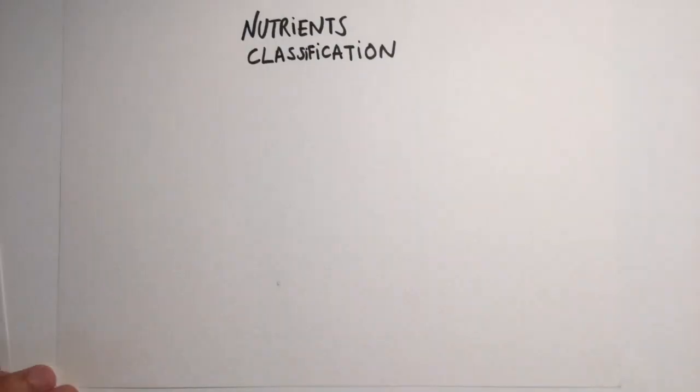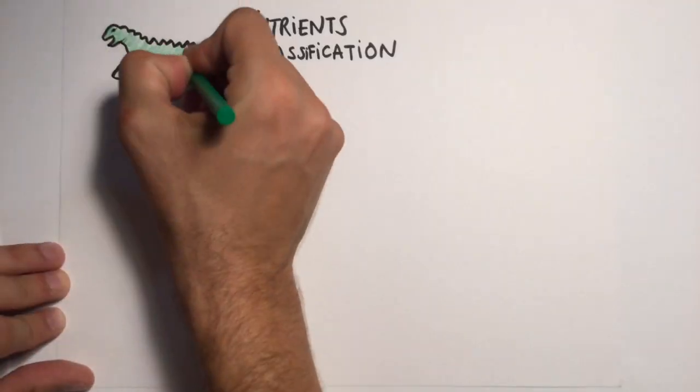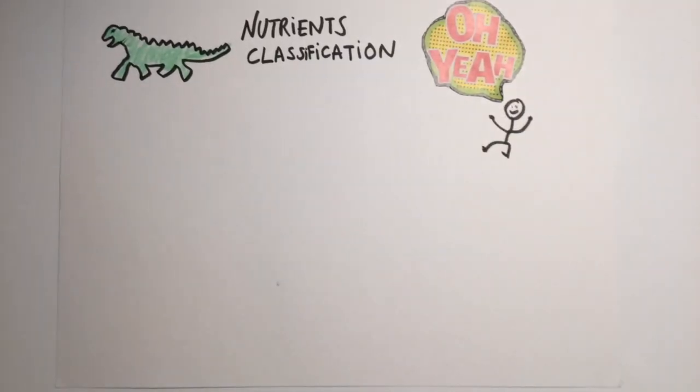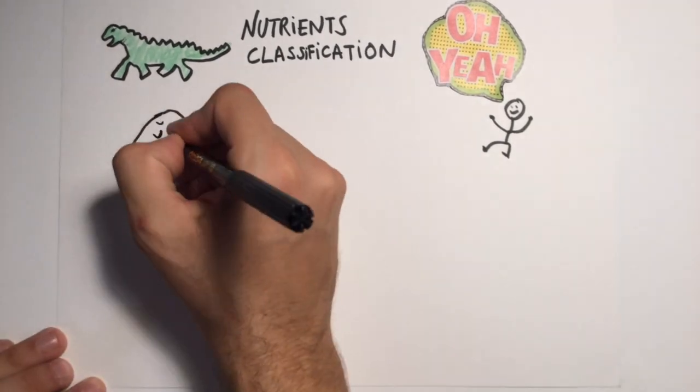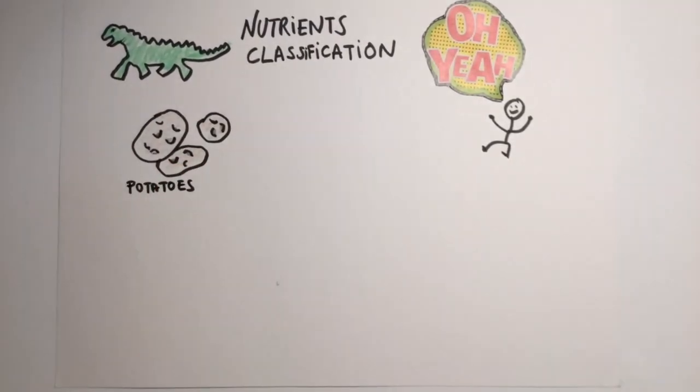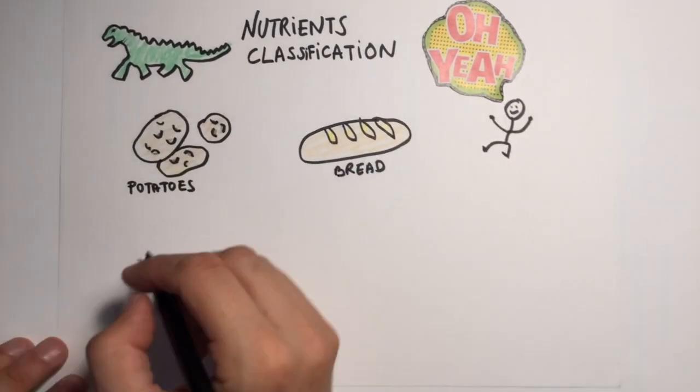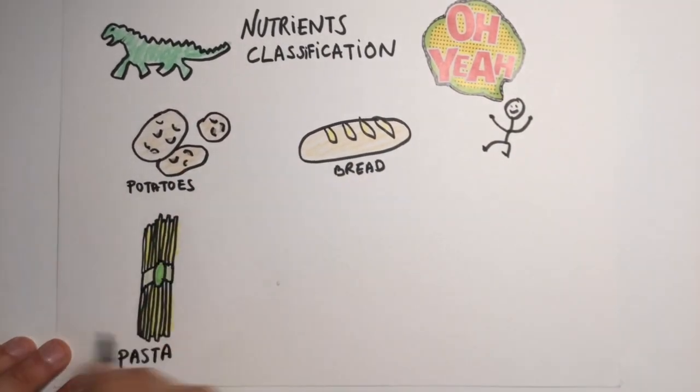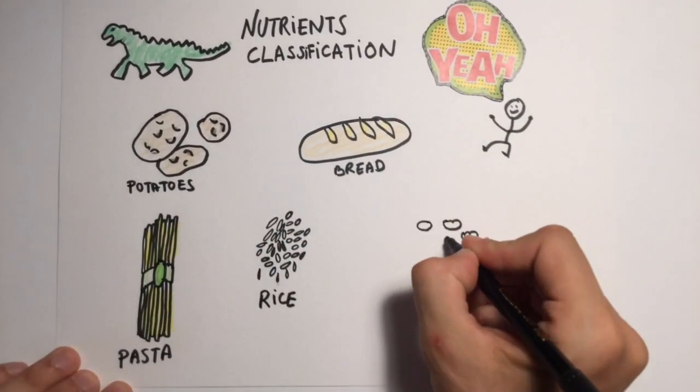Nutrients are classified into groups. The first one are the carbohydrates. They provide a fast supply of energy and are mainly found in potatoes, bread, rice, pasta, and beans and lentils.